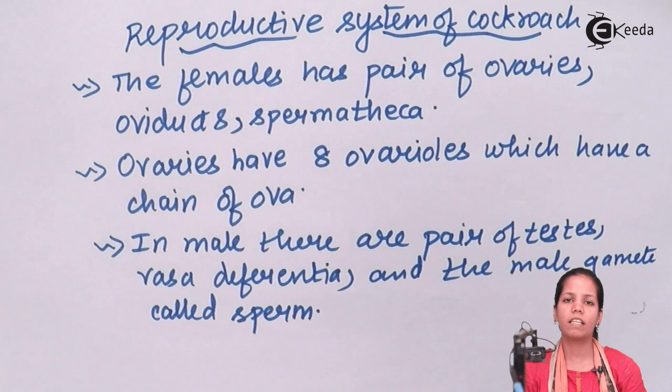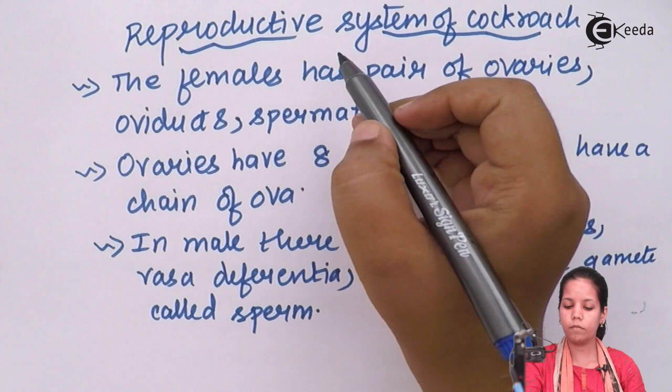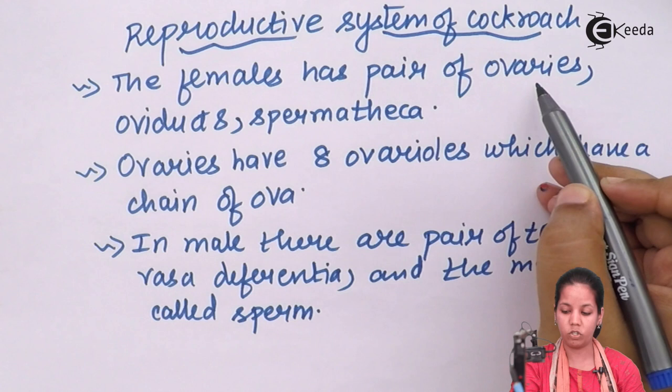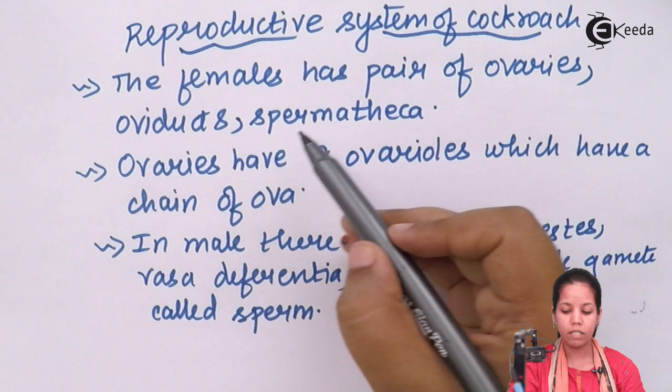There are structures or organs which are very similar to the human reproductive system. The reproductive system in cockroaches — the females have a pair of ovaries, obviously located in the female reproductive tract. This pair of ovaries present in cockroaches produces oviducts or spermatheca, which is the female reproductive gamete.